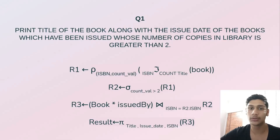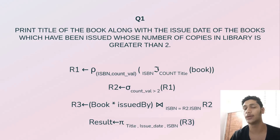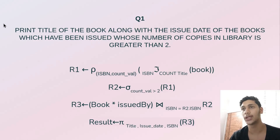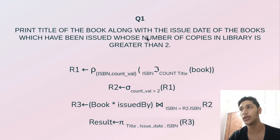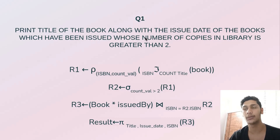Hello everyone, in this video I am going to explain some relational algebra queries performed on the given statements. The first statement: print the title of the book along with the issue date of the books which have been issued, whose number of copies in the library is greater than two.